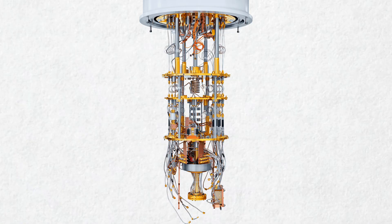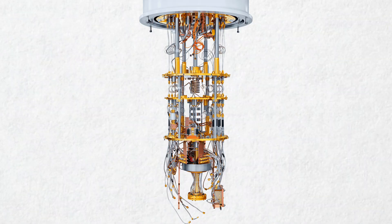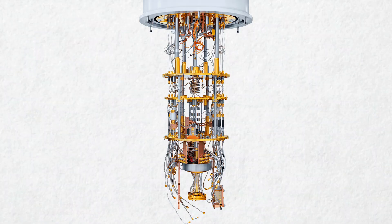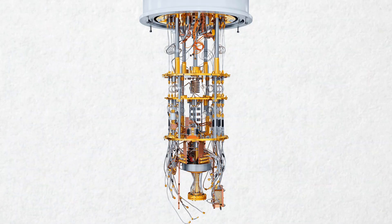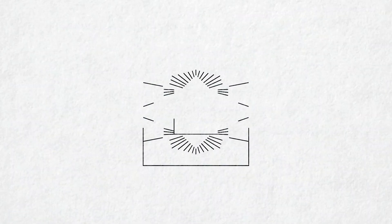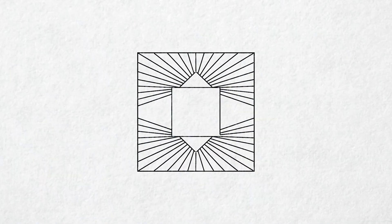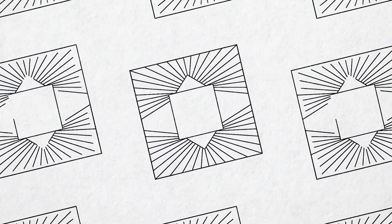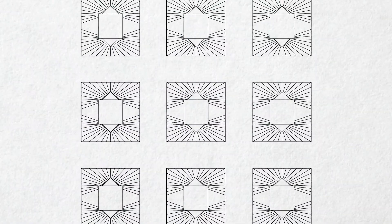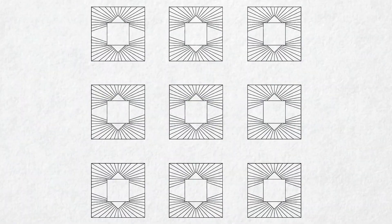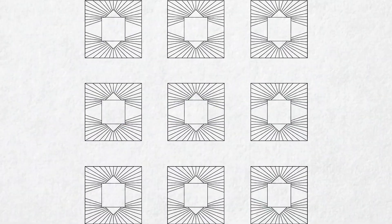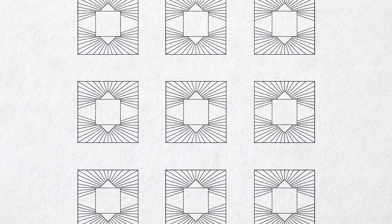They travel down superconducting coaxial cables through the 800 mK and 100 mK stages, passing one-way isolators that block noise. In the mixing chamber, below 20 mK, the pulses reach the superconducting chip itself, a silicon or sapphire wafer patterned with qubit loops and bolted to the chamber floor inside magnetic and vacuum shields. This is where the actual quantum gate operations occur, with dynamic decoupling and other error mitigation techniques.